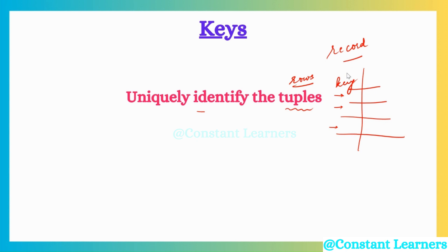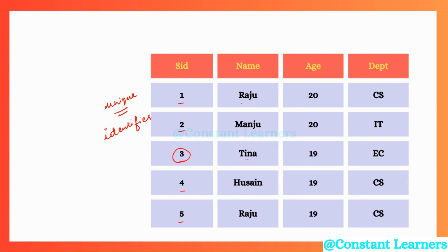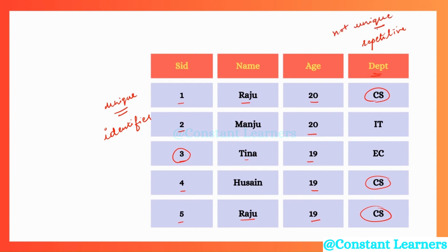Can we use name as a key? No — because there are two students with the same name; there can be multiple students with the same name, so it cannot uniquely identify a student. Can we use age? No — there are multiple students with the same age; two are 20 years old and three are 19 years old. Can we use department as a key? No — three students have department CS, so we have repetitive data. Keys are unique identifiers, so unless a column has unique data, it cannot be identified as a key.